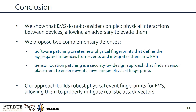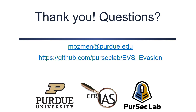In conclusion, we show that existing EVS are vulnerable to evasion attacks because they do not consider complex physical relations between events and sensor readings. We propose two complementary defenses — software patching and sensor location patching — to prevent these attacks. Our approach builds robust physical fingerprints that can mitigate realistic attack vectors. Thank you, and I'm open to any questions.